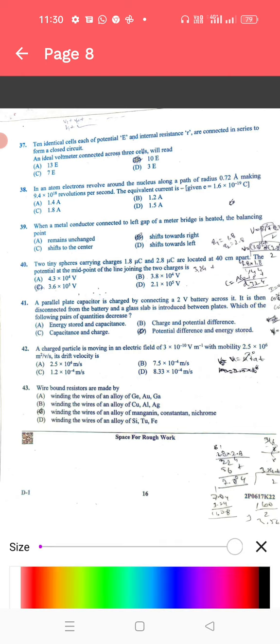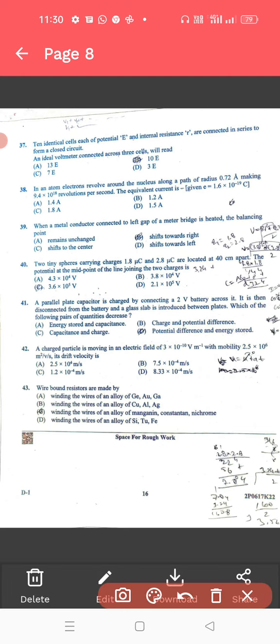37, the two identical. For 37, the correct answer is 3E. 38, in an atom, electrons revolve around the nucleus. For 38, the correct answer is 1.5 amps.